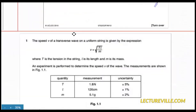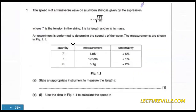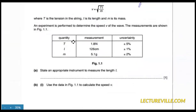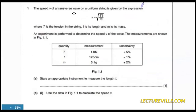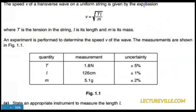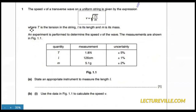Moving on to the next question from errors and uncertainties. The speed v of a transverse wave on a uniform string is given by v equals the square root of tension T times length L over mass m. This formula is not part of the syllabus — the examiner gives an unfamiliar formula to test whether you can work with it. T is tension, L is length, and m is mass.